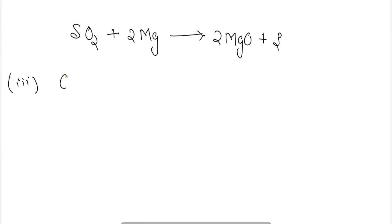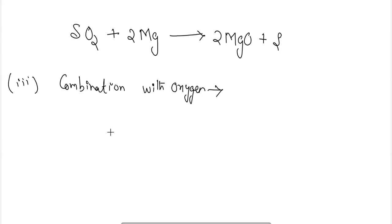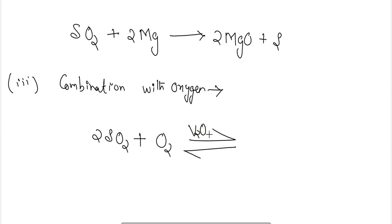Combination with oxygen: When sulfur dioxide is reacted with oxygen in the presence of vanadium pentoxide (V2O5) as catalyst, a reversible reaction takes place forming sulfur trioxide (SO3). This is a very slow process and is also carried out using platinized asbestos as a catalyst.